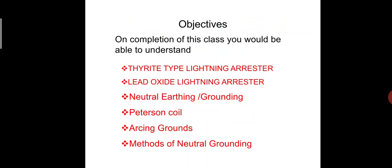On completion of this class, you would be able to understand: Theratite Type Lightning Arrester, Lead Oxide Lightning Arrester, Neutral Earthing or Grounding, Peterson Coil, Arcing Grounds, and Methods of Neutral Grounding. These are the topics discussed in this class.